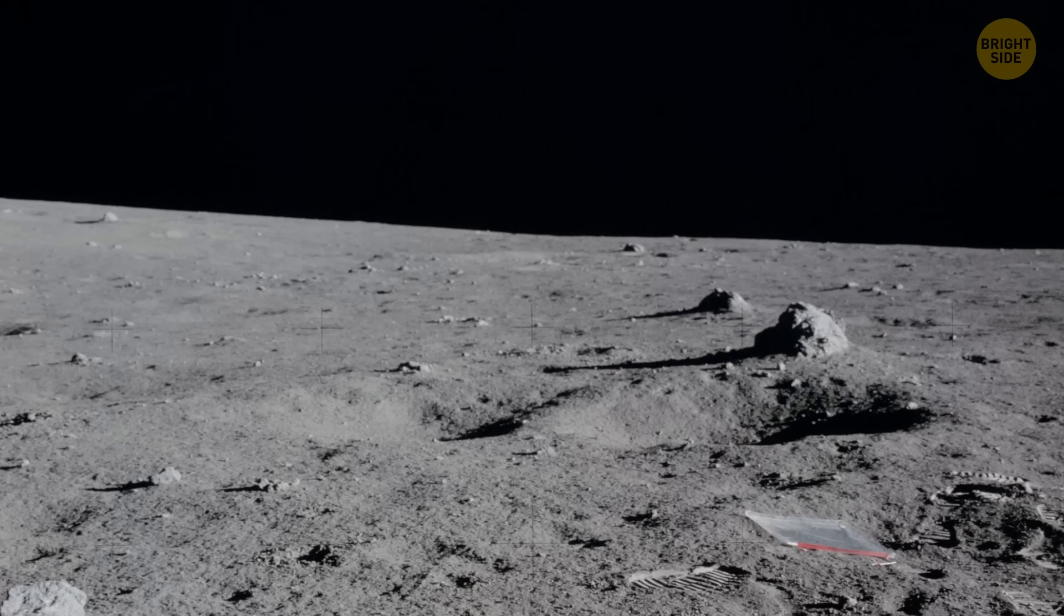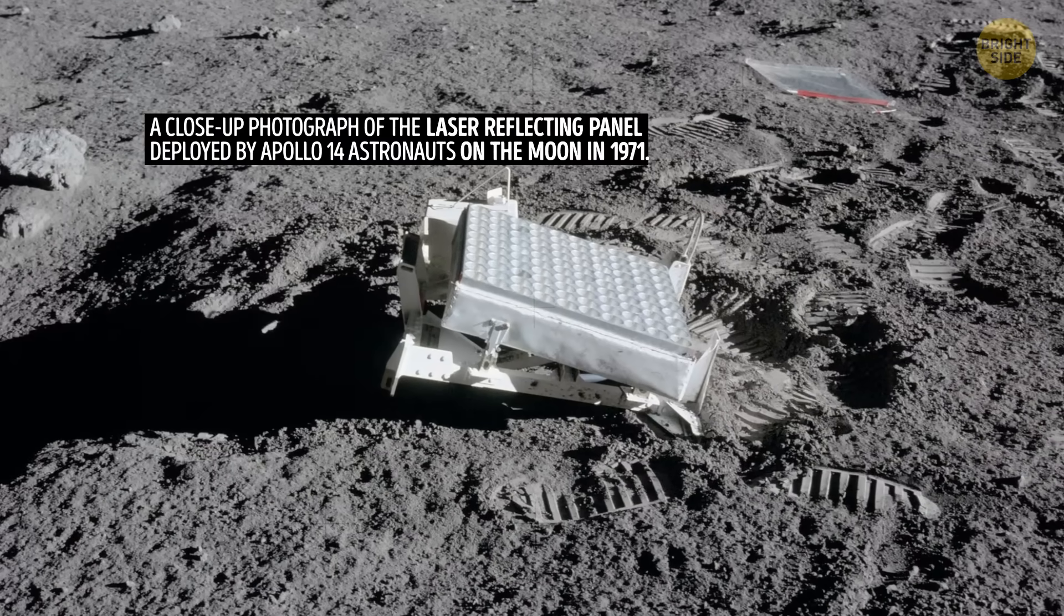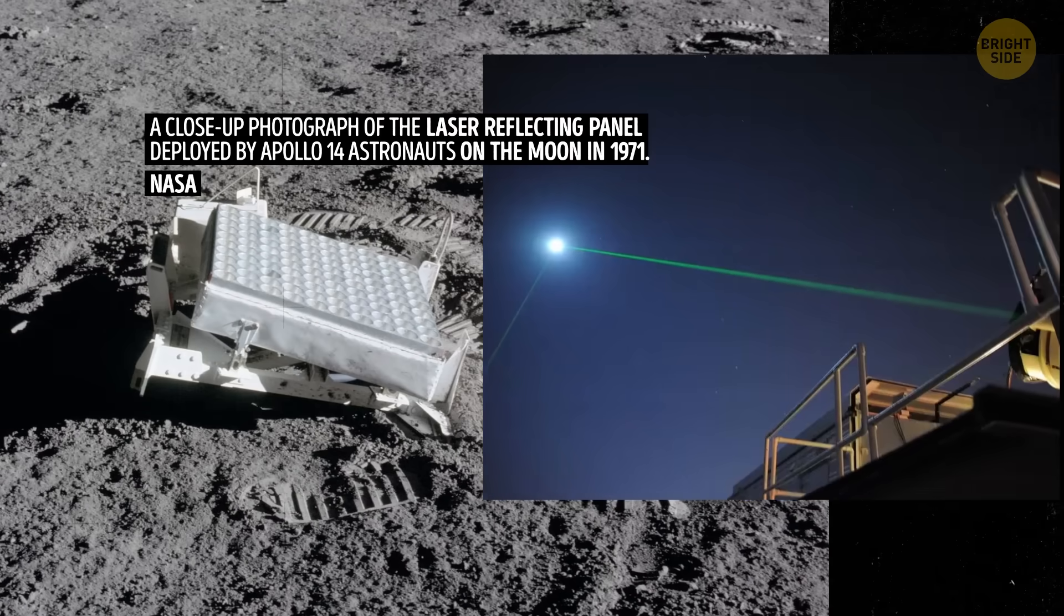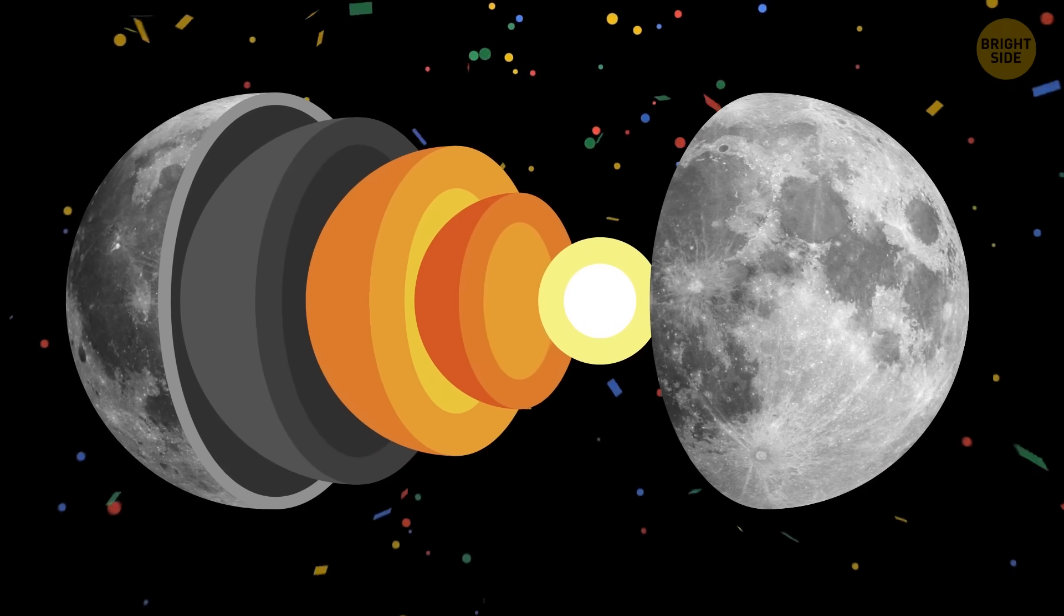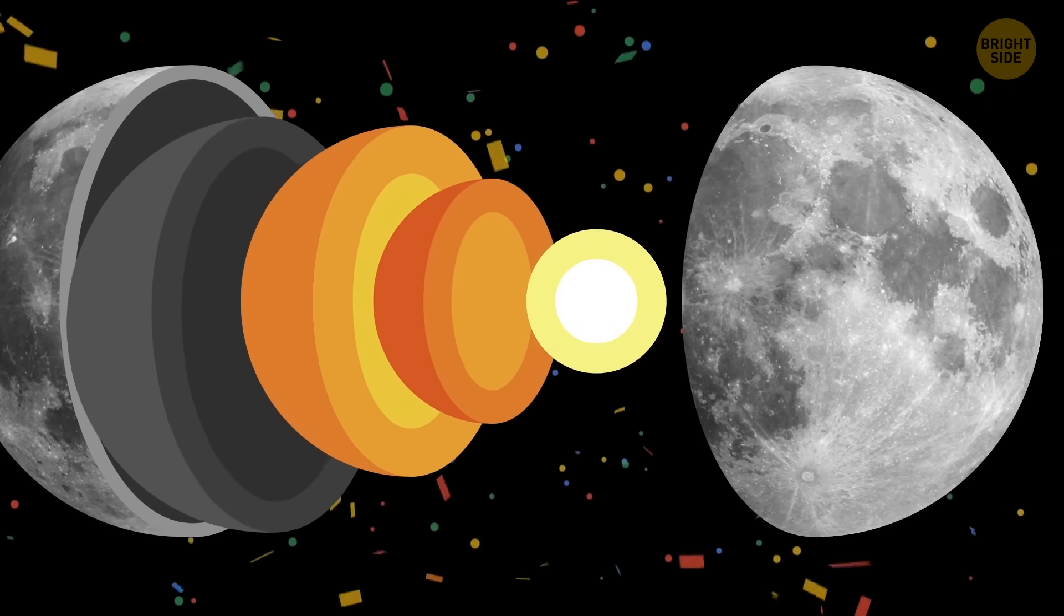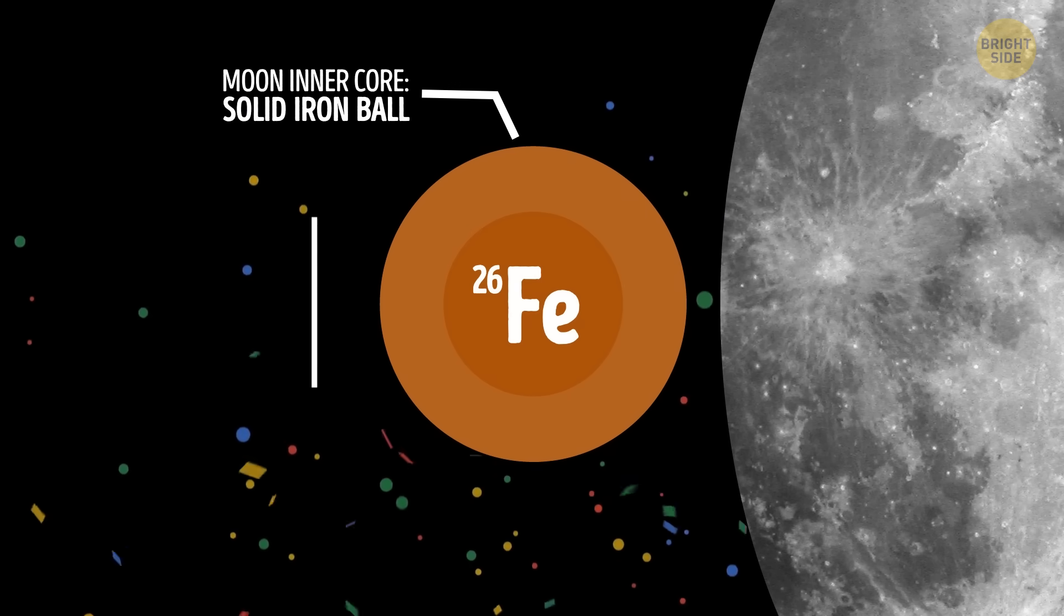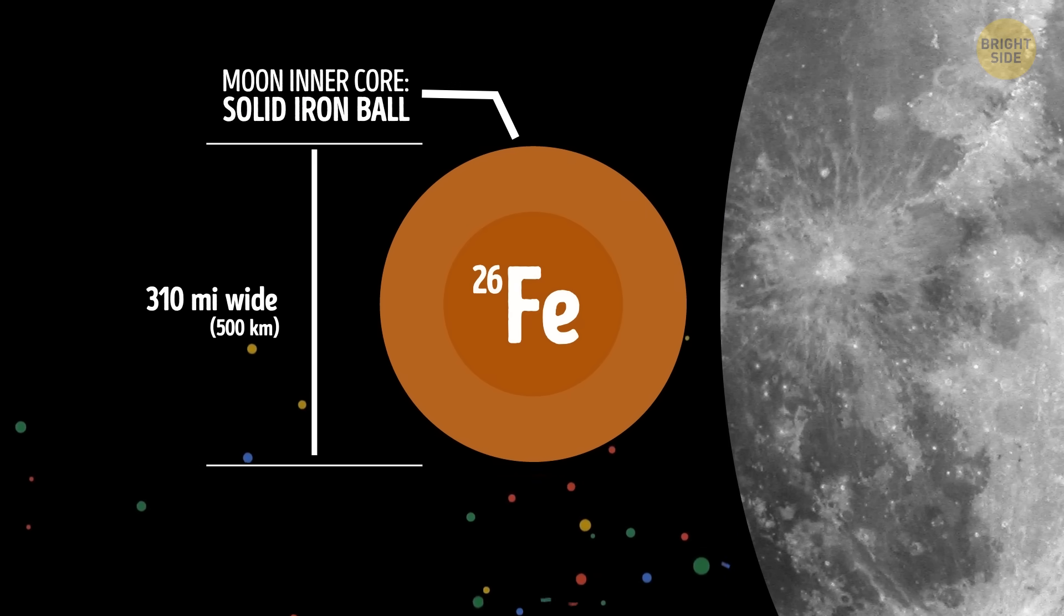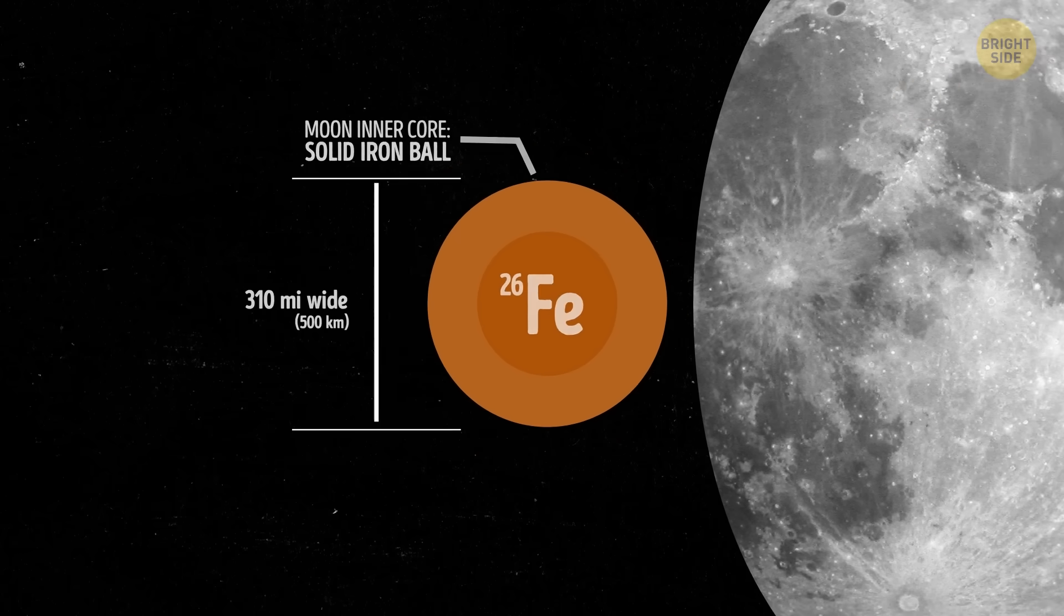To check the moon's deep interior, scientists also use something called laser ranging. This method measures the distance between the surface of the Earth and the moon very precisely. And ta-da! Our natural satellite's inner core is a dense, solid ball made of iron, just like Earth's. It's about 310 miles wide, which is nearly 15% the size of the entire moon.